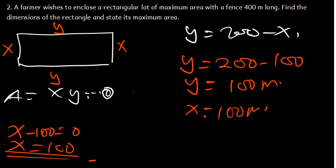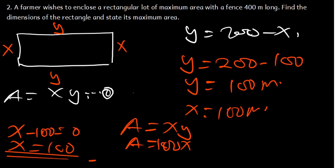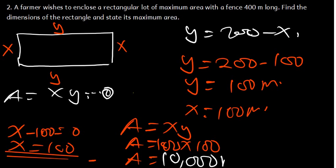To find the maximum area, we use A = X times Y = 100 times 100 = 10,000. So the maximum area is 10,000 square meters. This is what you need to know under the application of quadratic functions.